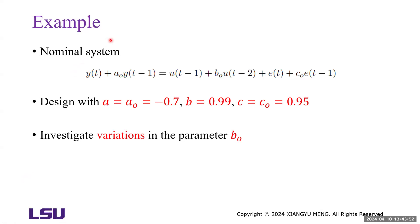Let me give you one example to discuss the sensitivity analysis. The physical plant is described by this dynamic equation. We can also call the physical plant the nominal system. The A0, B0, and C0 are some unknown parameters. To make it simple, we assume A0 is known — A0 is known to be negative 0.7, and C0 is known to be 0.95. We will use this mathematical model to design the controller.